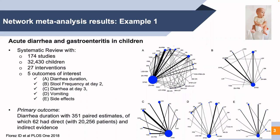For example, in this systematic review with network meta-analysis for acute diarrhea and gastroenteritis in children, we included 174 studies comprising approximately 32,000 children and 27 different interventions. We explored five outcomes, as you can see in those five different network plots, with a primary outcome of diarrhea duration. Each outcome builds a different network geometry, and its network may include different numbers of studies, interventions, and patients in total.